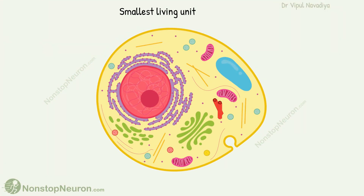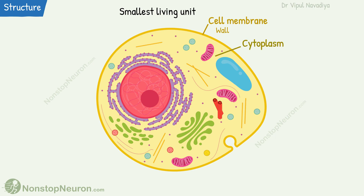The cell is the smallest living unit in the body. The cell membrane makes the wall of the cell — it separates the interior of the cell from the exterior. The base substance inside the cell is cytoplasm, a gelatinous liquid. Various organelles are suspended in the cytoplasm.